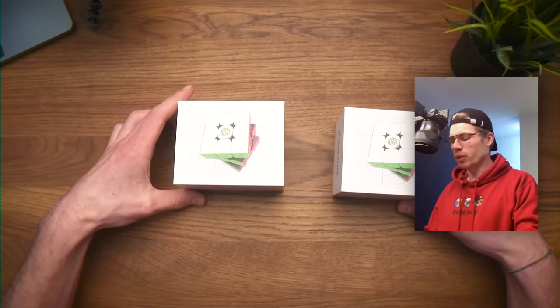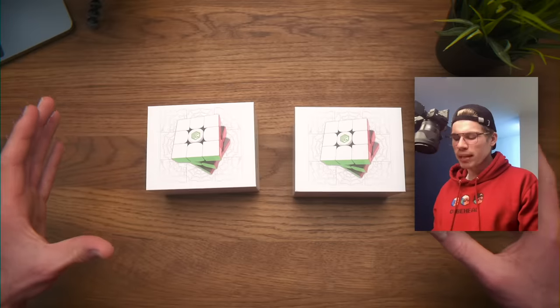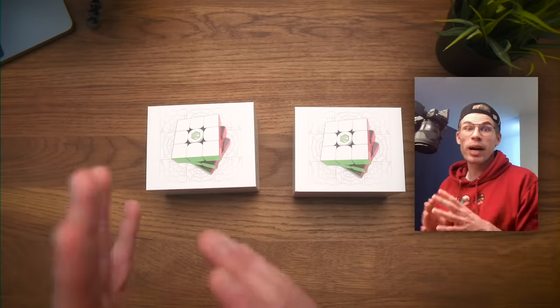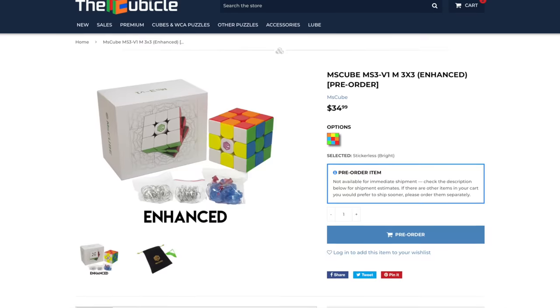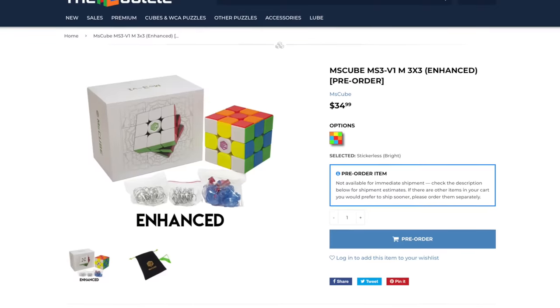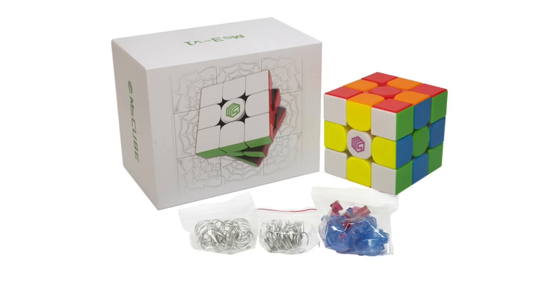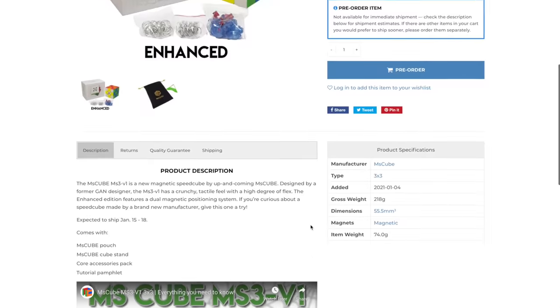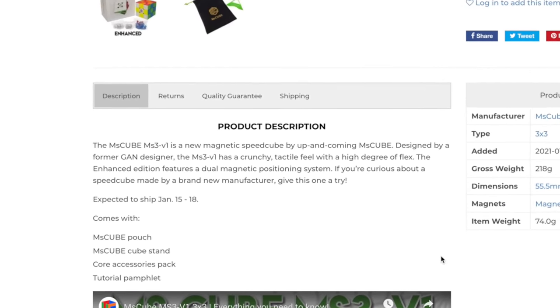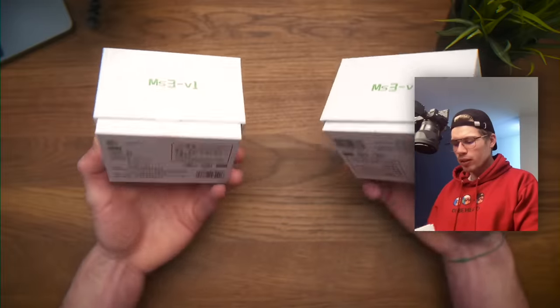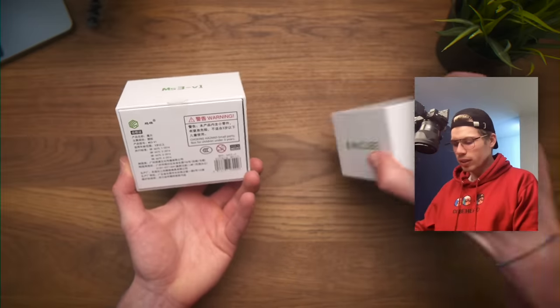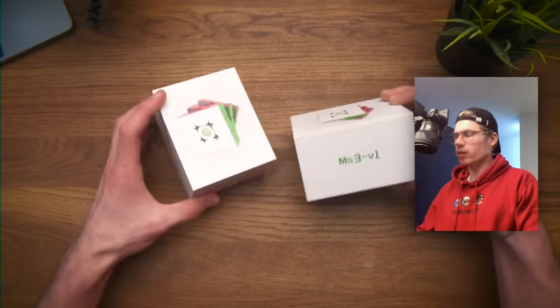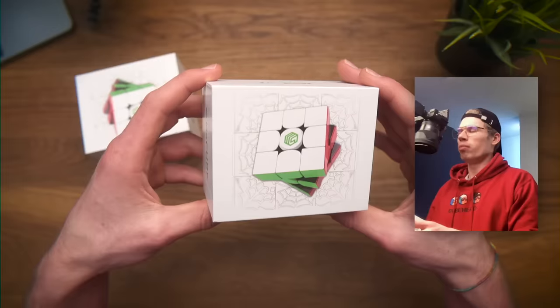What interests me most are obviously the MS cubes, so I'm gonna open those first. If you haven't heard about the MS cubes, I'll quickly summarize why they're so special. The MS3 version 1 is the first release by MSCube, and it's designed by a former GAN designer. I know that one of them is enhanced and the other is the normal version, although the boxes are identical.